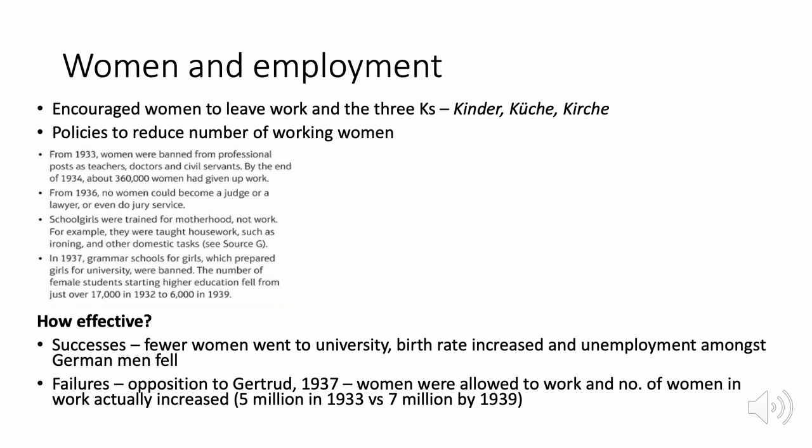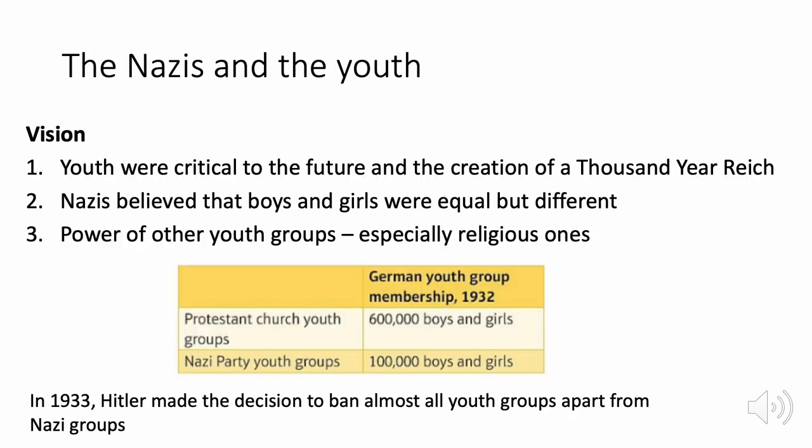By 1937, women were allowed to work again, and the number of women in work actually increased — from 5 million in 1933 to 7 million by 1939 — because with war looming, women were needed in factories producing armaments and contributing to the war effort.